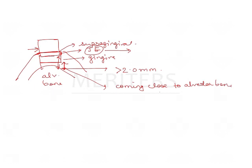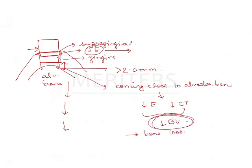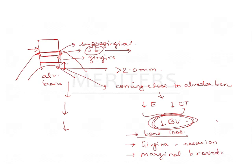Because you are coming close to the alveolar bone, there is reduction in the epithelium, reduction in the connective tissue, and reduction in the biologic width. So the body's response will be to take the alveolar bone away from the tooth — there will be bone loss. Because the body wants to maintain this biologic width at all times, due to bone loss the gingiva will keep going down, resulting in gingival recession and marginal breakdown — meaning prosthetic failure and periodontal failure.